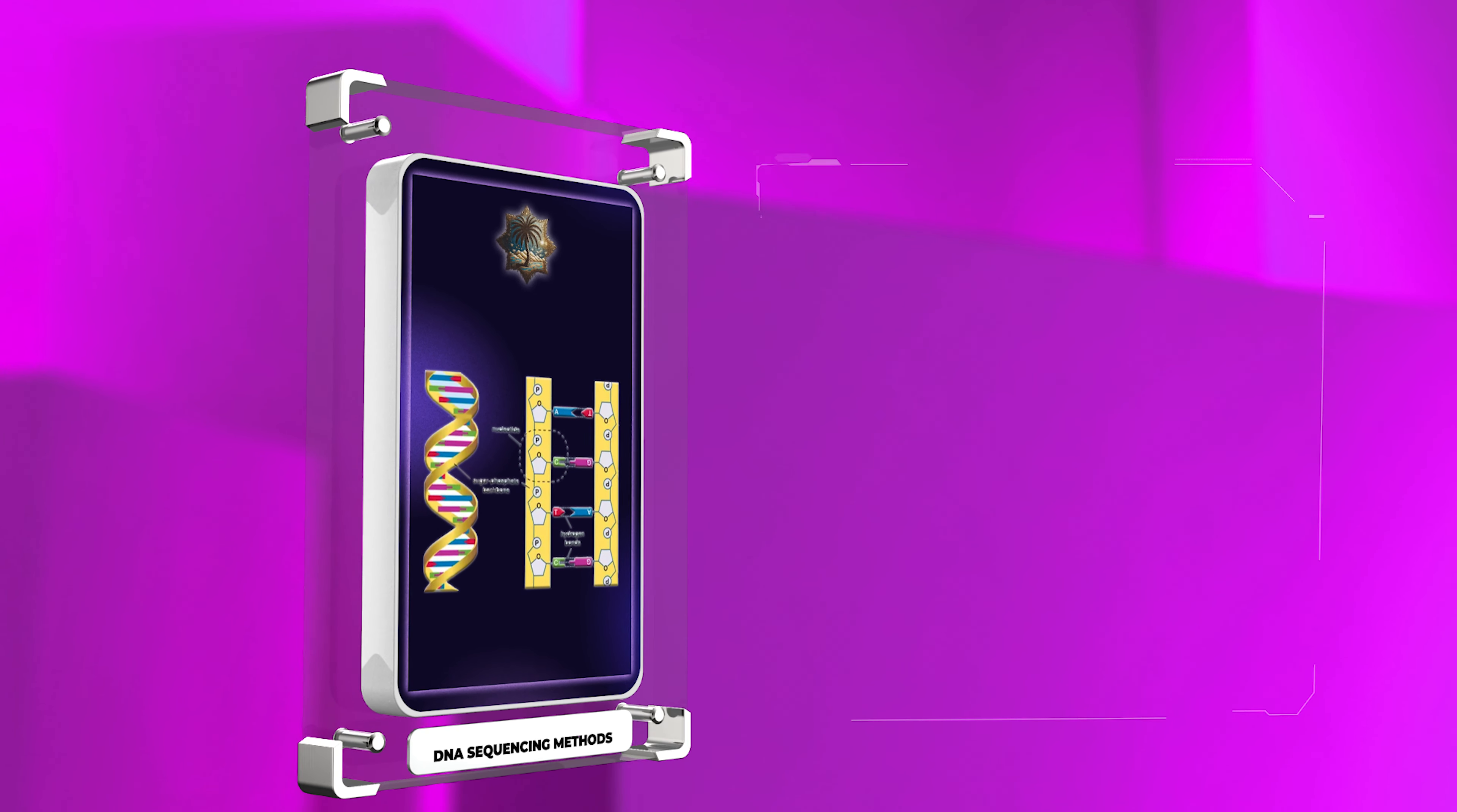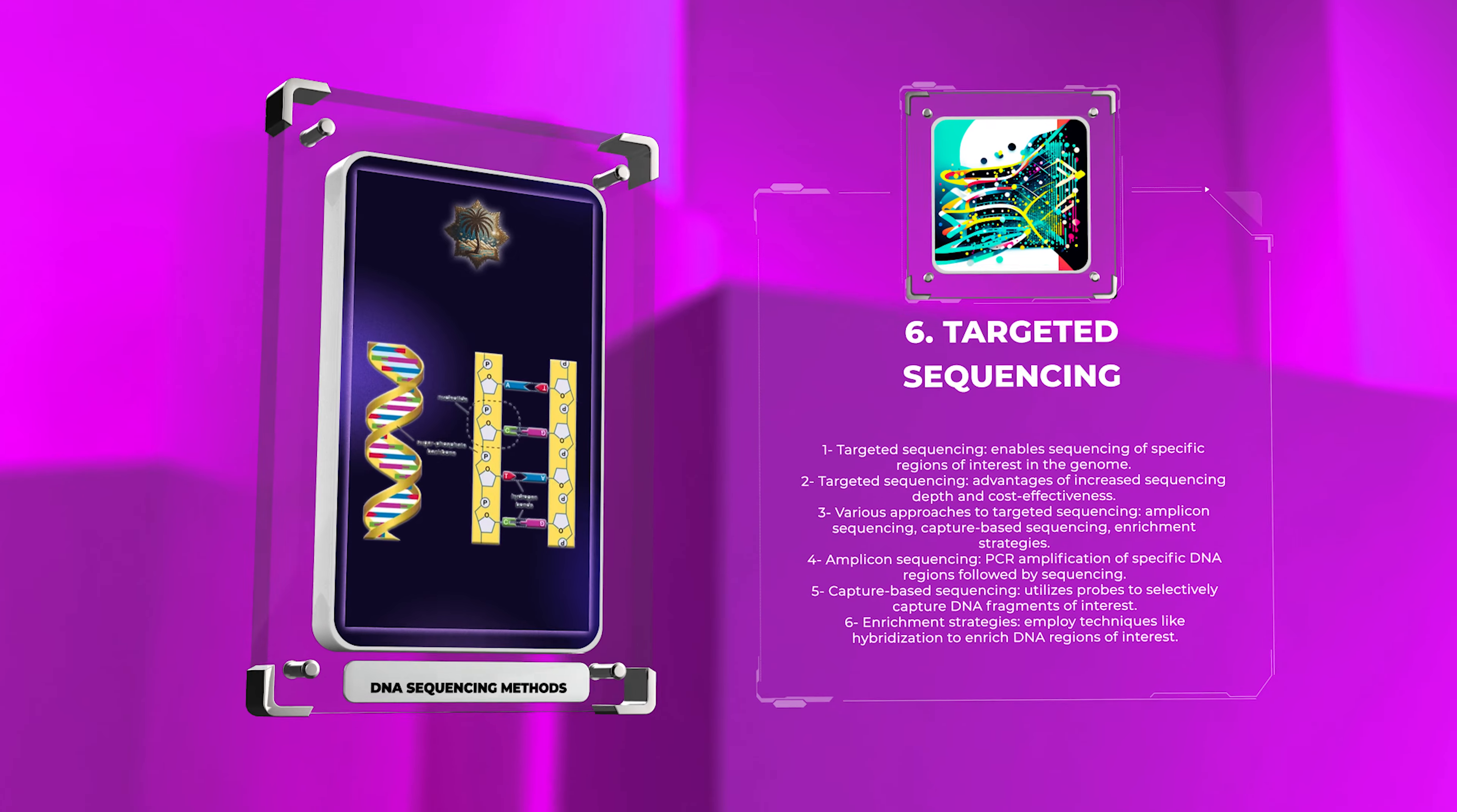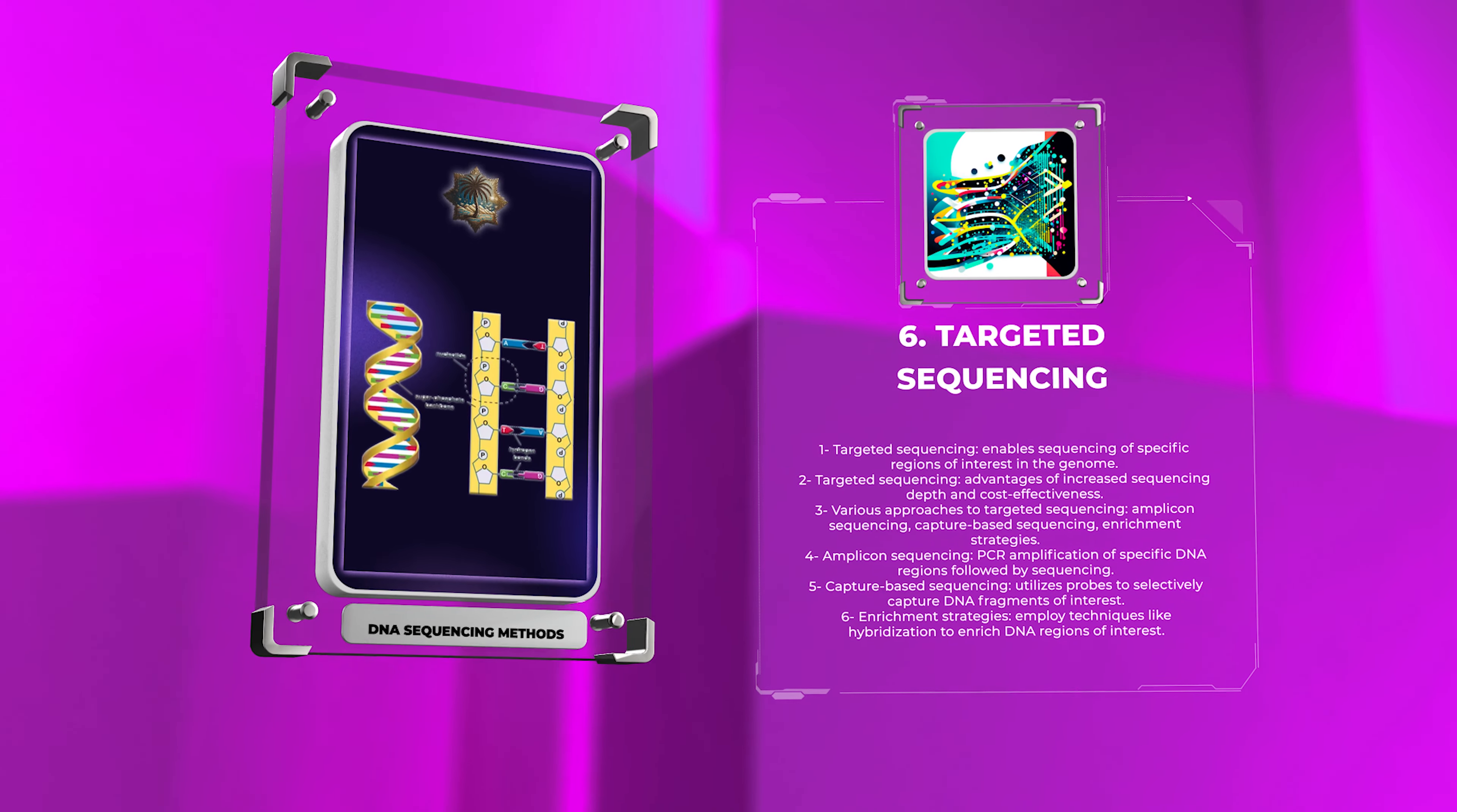In targeted sequencing, we'll explore methods that enable sequencing of specific regions of interest in the genome. These techniques offer advantages such as increased sequencing depth and cost-effectiveness compared to whole genome sequencing. There are various approaches to targeted sequencing, including amplicon sequencing, capture-based sequencing, and enrichment strategies. Amplicon sequencing involves PCR amplification of specific DNA regions followed by sequencing. Capture-based sequencing utilizes probes to selectively capture DNA fragments of interest. Enrichment strategies employ techniques like hybridization to enrich the DNA regions of interest.